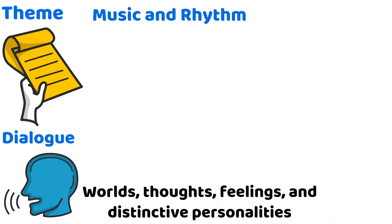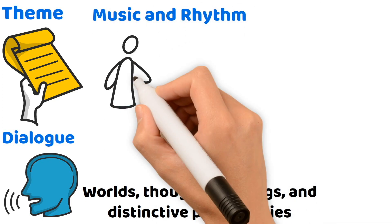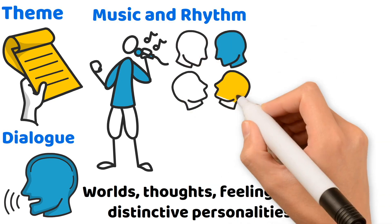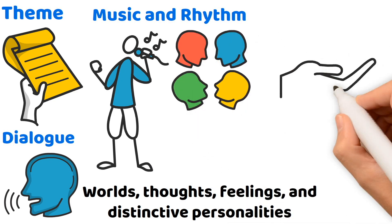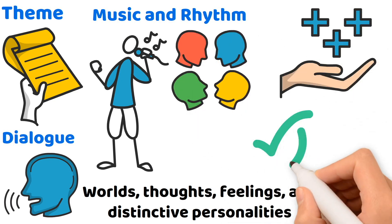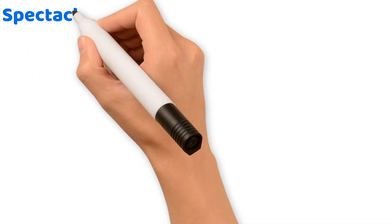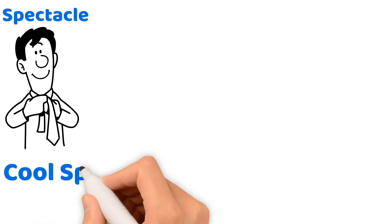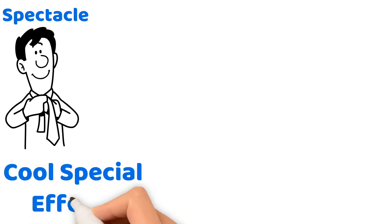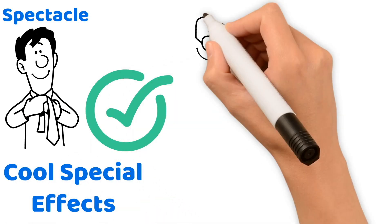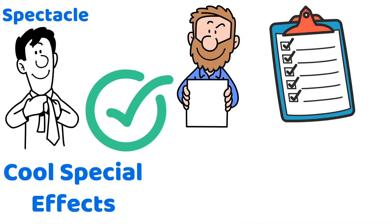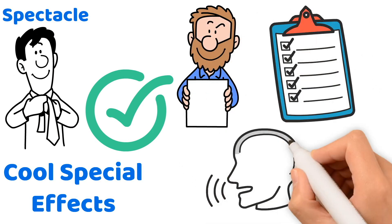Don't forget music and rhythm — whether it's a musical score or dialogue in a drama, this element adds an auditory depth and emotional texture that enriches the performance. Let's talk about spectacle in theater: those amazing costumes, the detailed sets, and the cool special effects that make you feel like you're part of the story. For your teacher certification exam, look for answer options that help engage students with the story being told.